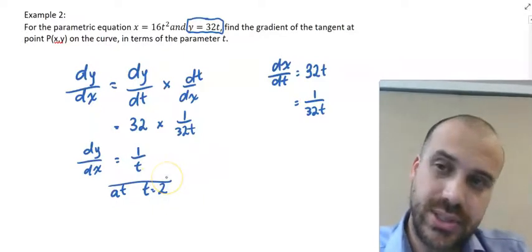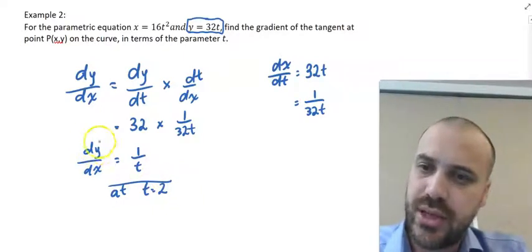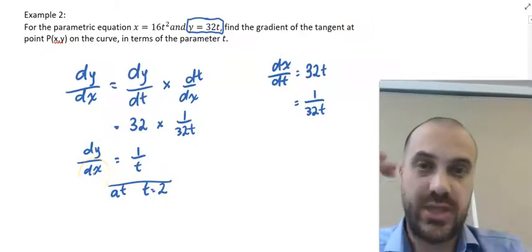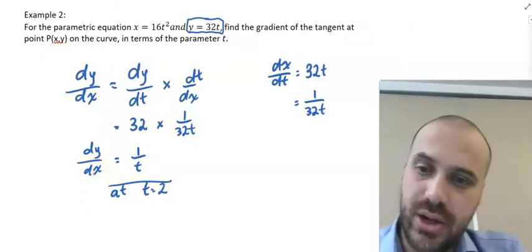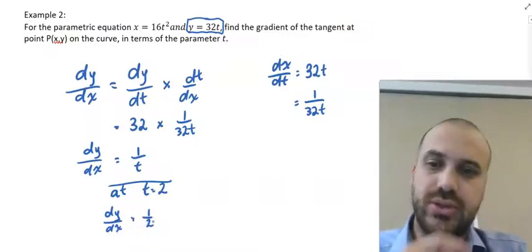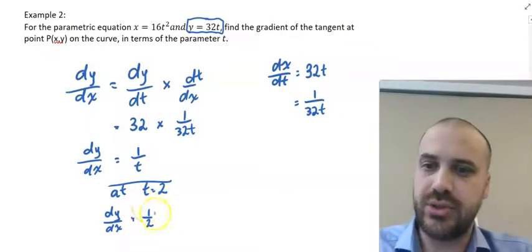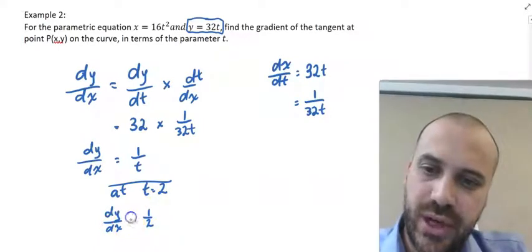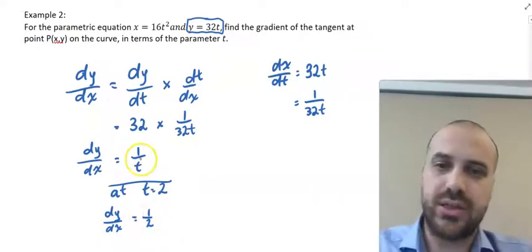This is an example, this isn't answering this question, at t equals 2, the gradient of the tangent to this curve is going to be equal to dy/dx equals 1 on 2. So, this is a nice little use for that. You're finding the derivative using the parameter, not x or y.